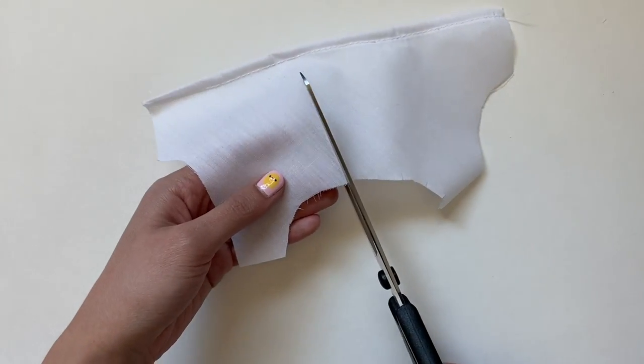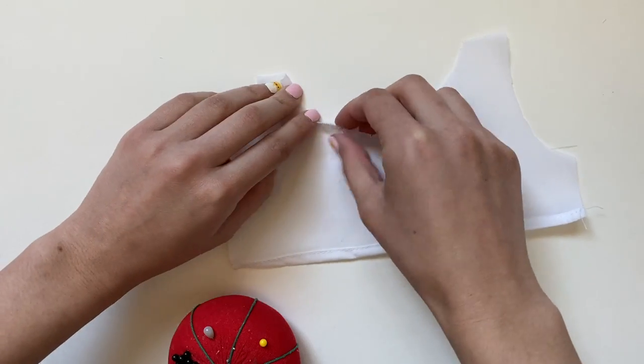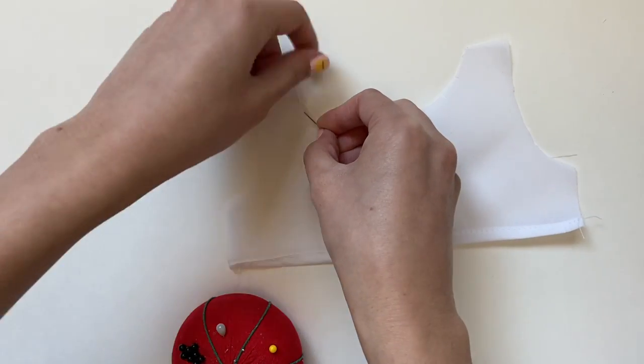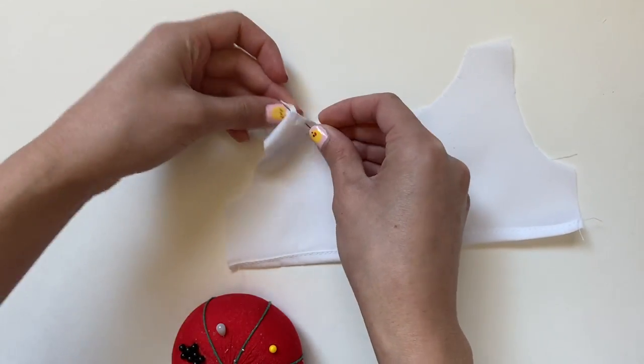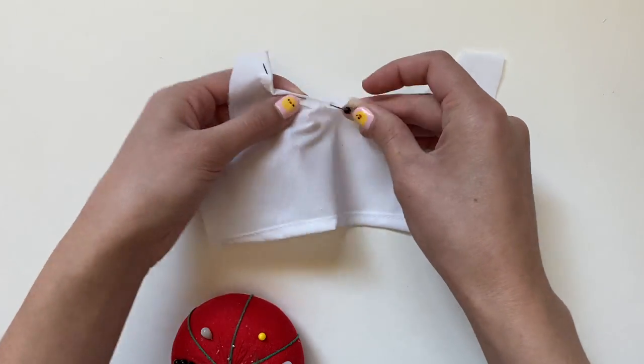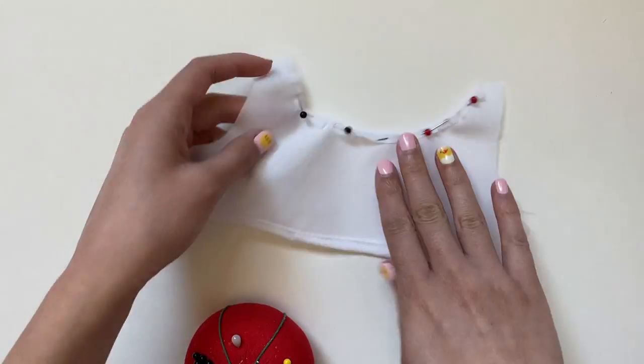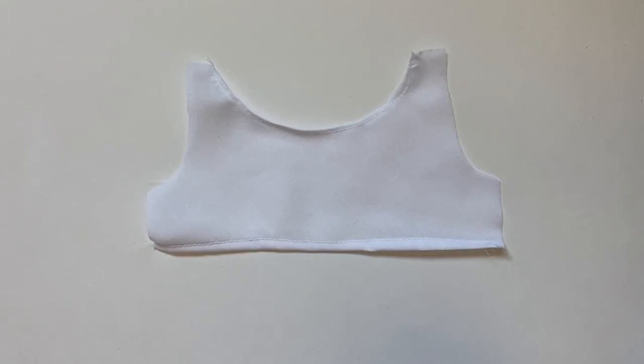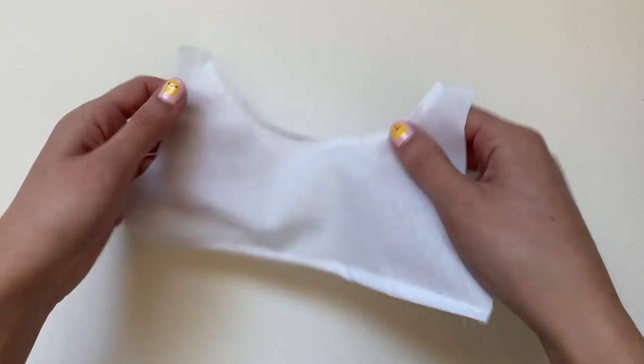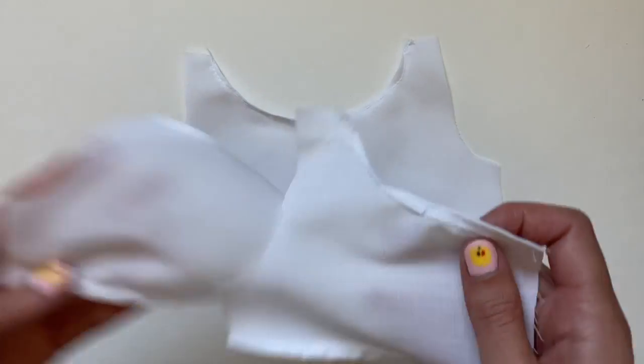Now I need to hem the necklines of these. To make it easier to fold this over, I'm going to do some cuts around the especially curved parts. Then I'm going to fold that over only once because doing it a second time gets a little tricky. After pinning that all down, I'm going to use a straight stitch to hem it. I'm going to repeat the same thing to the back pieces, and here is what they look like when they're done.